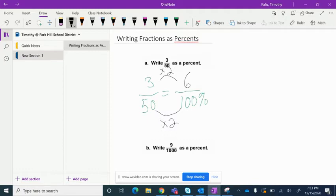Now it's 6 over 100. Now that is equivalent to 6% because percents are out of 100. So we can state that three fiftieths, which is our original fraction, is equivalent to 6%.